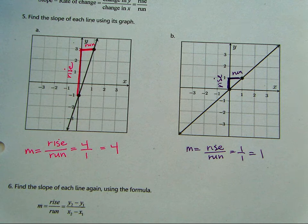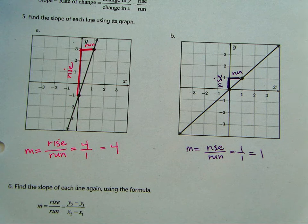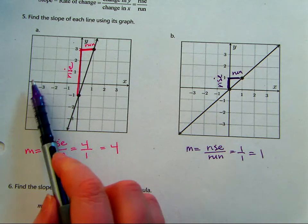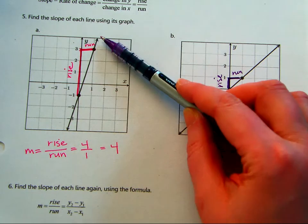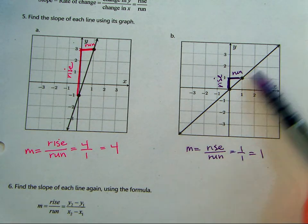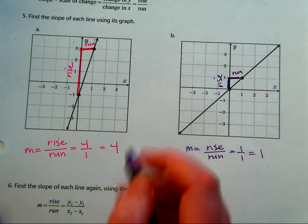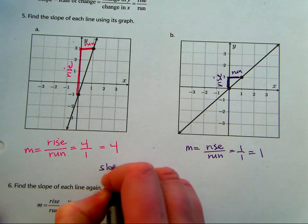And also, these slopes are both positive. So what does that mean about the line? Positive slope is increasing. Exactly. So we read slope from left to right. This is like you're going up the mountain. This is going up the mountain, but it's not as steep.